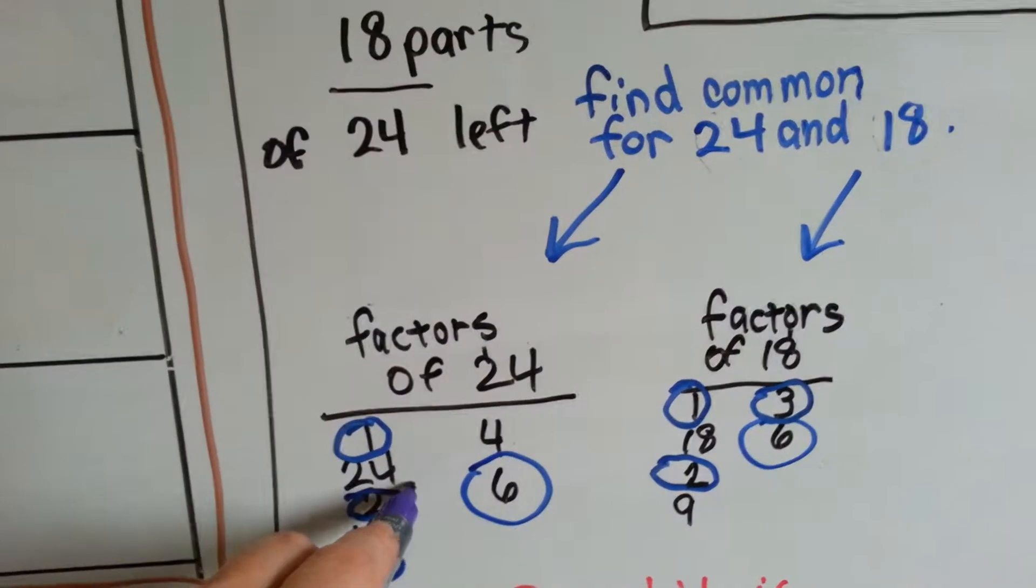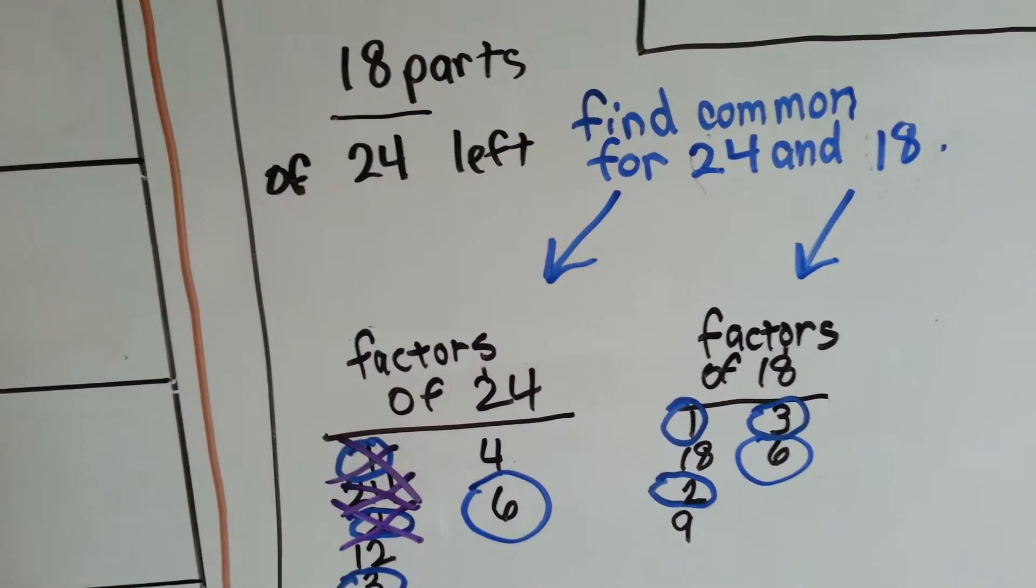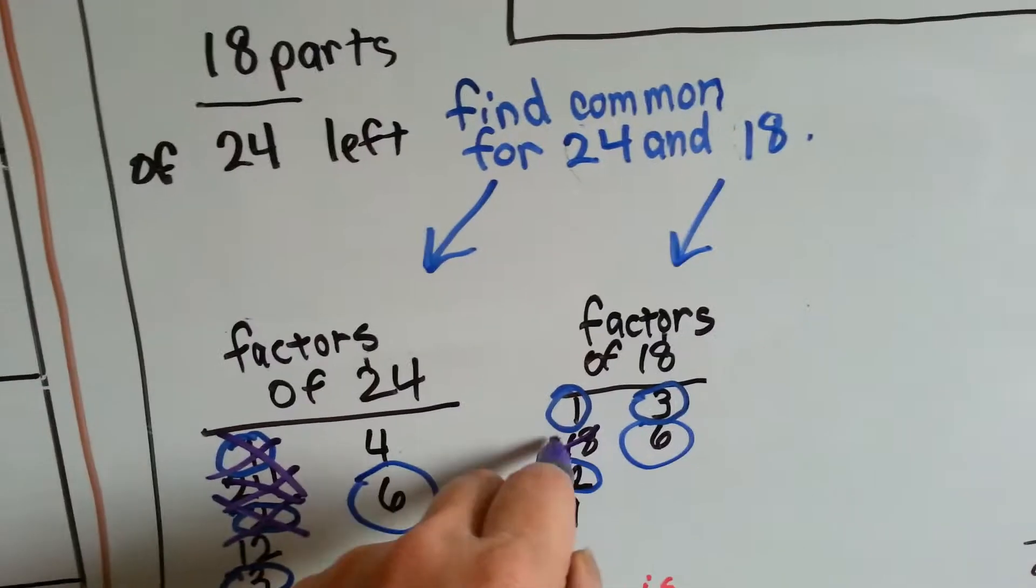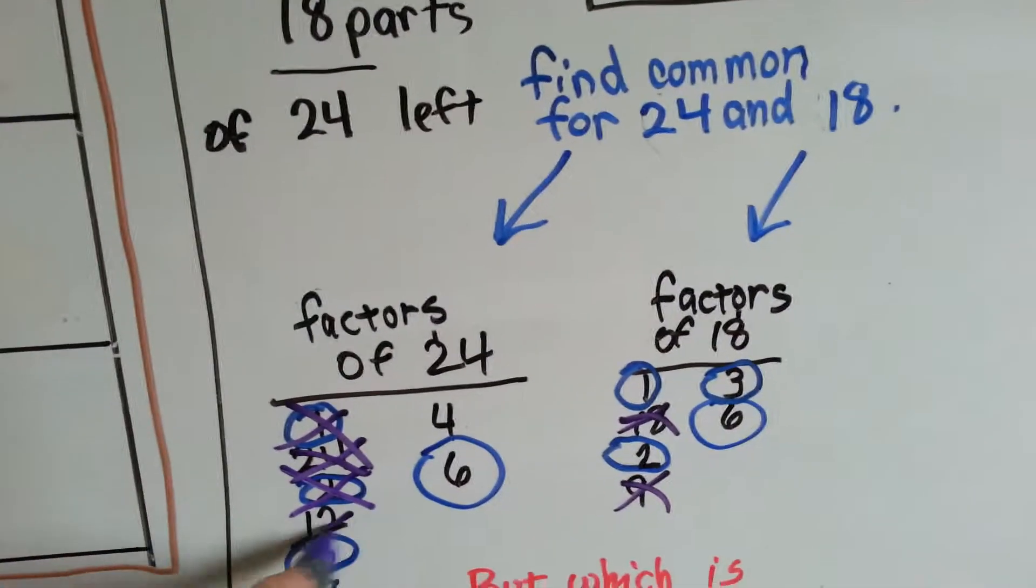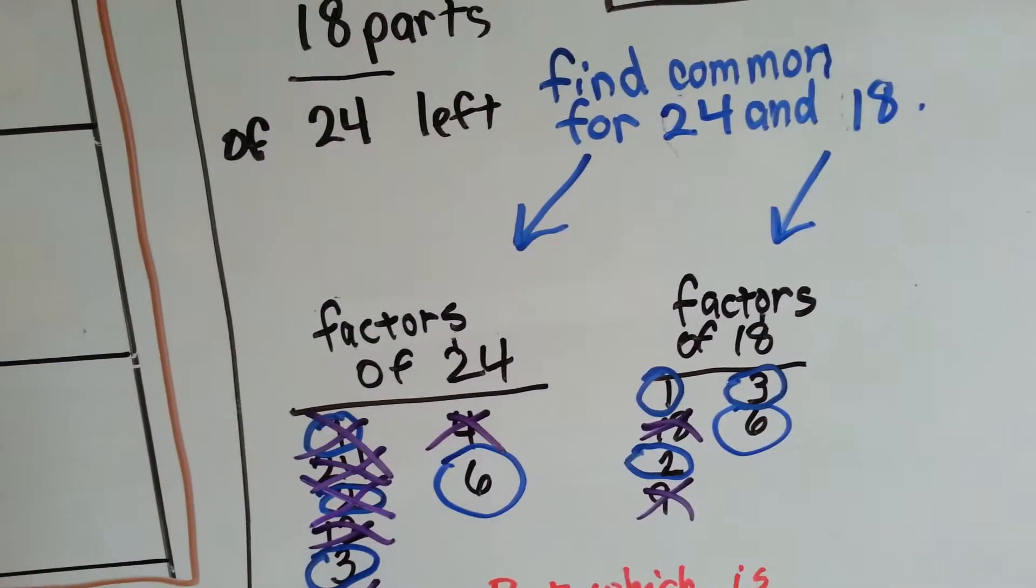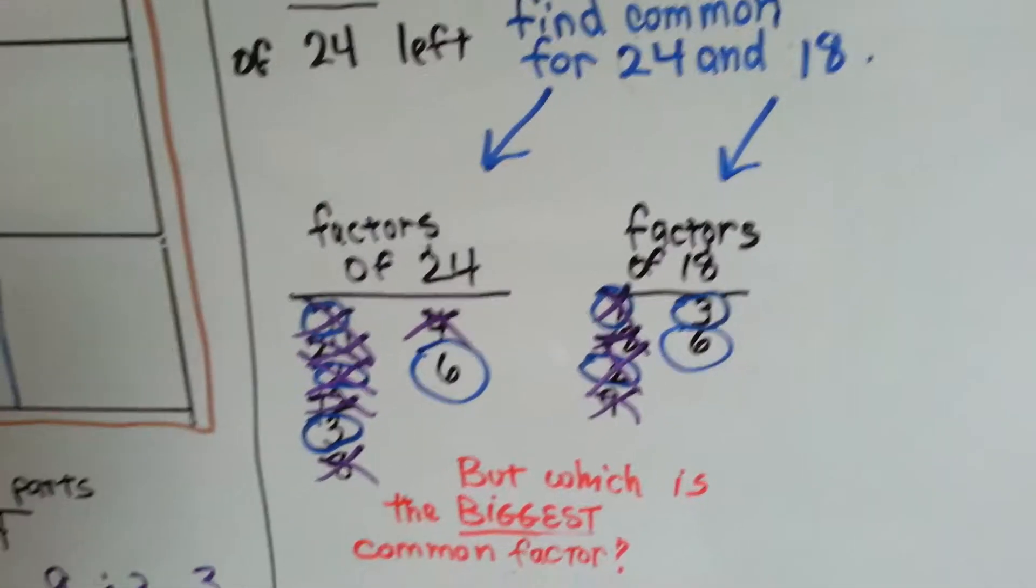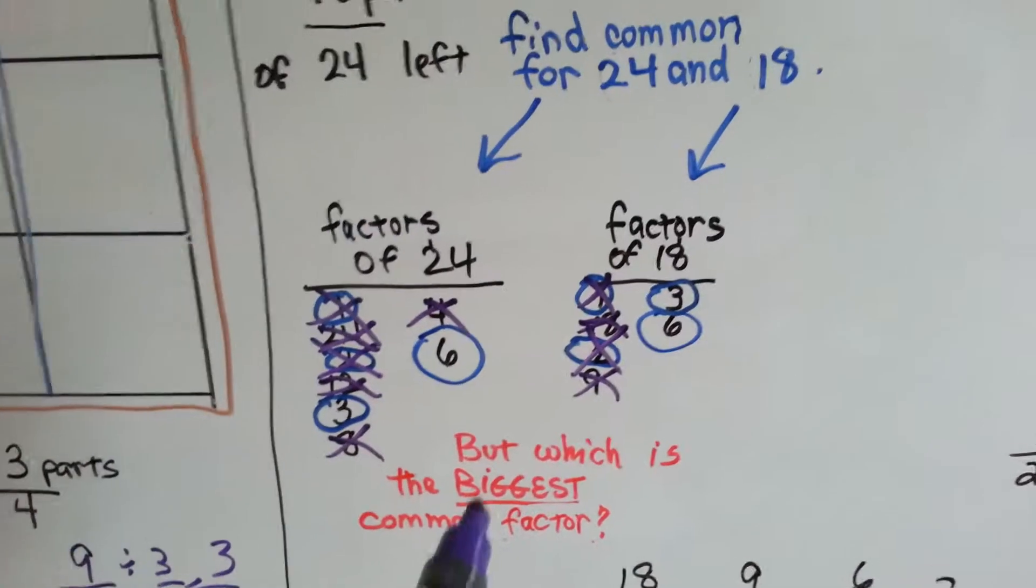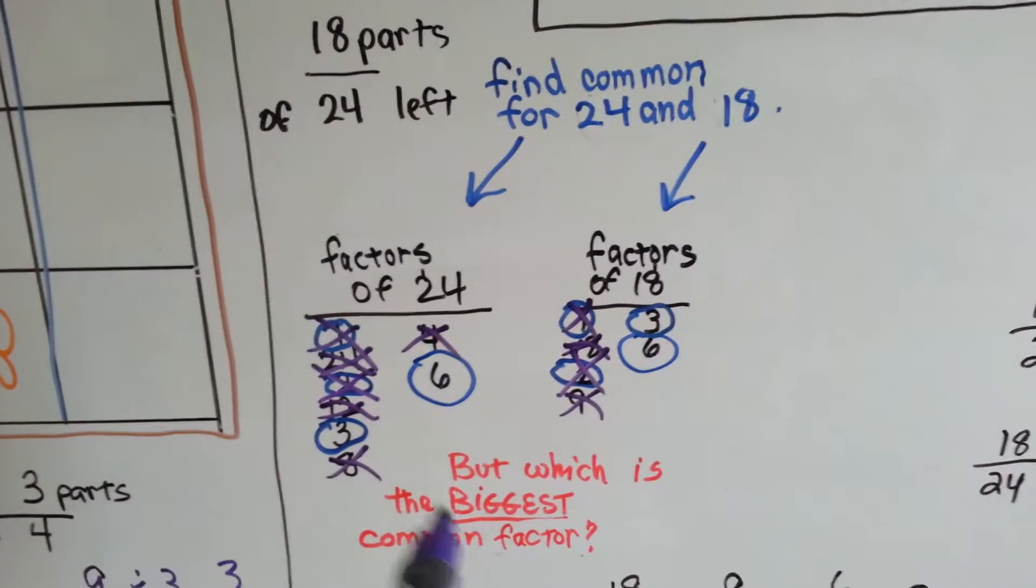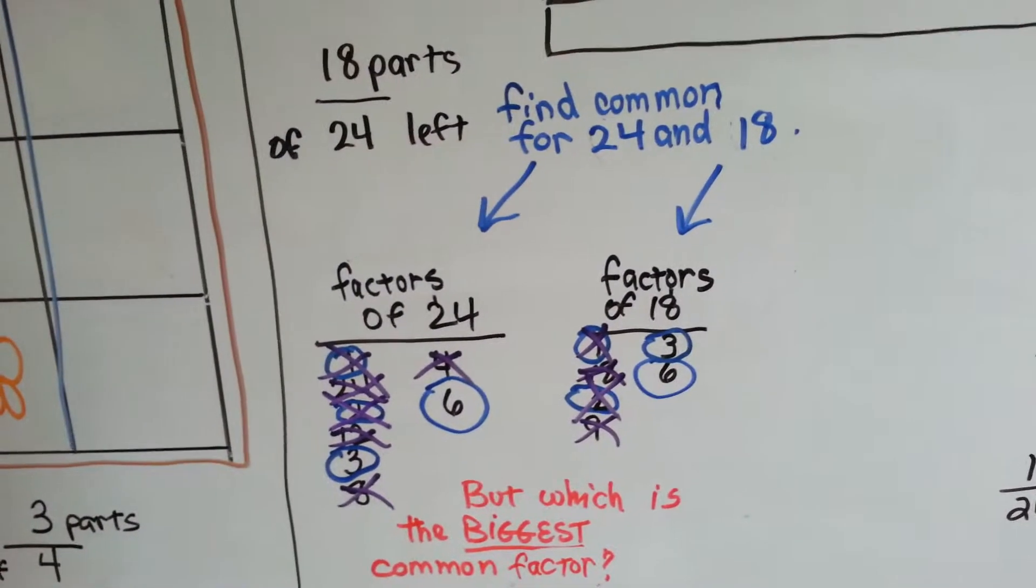So we don't want to use the two. We're not going to use the twenty-four or the one either, right? We can't use the eighteen. We can't use the nine because these are not in common. That's going to leave the three and the six. Now, we're supposed to choose the biggest one, but I'm going to show you what happens when we use the three.